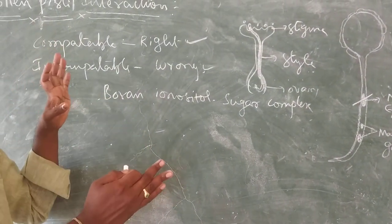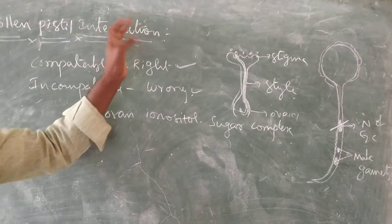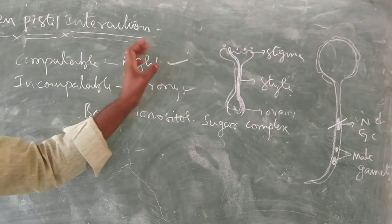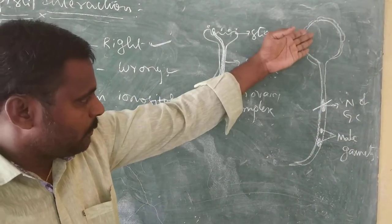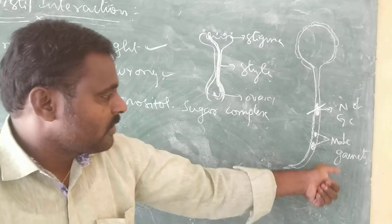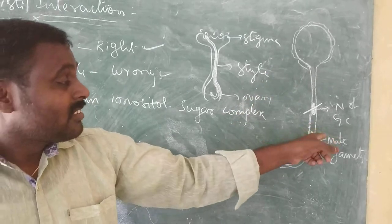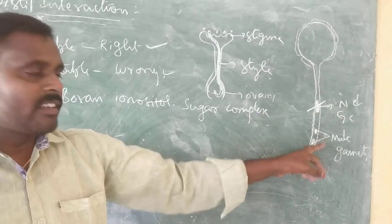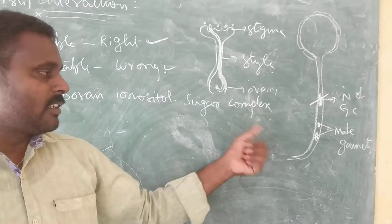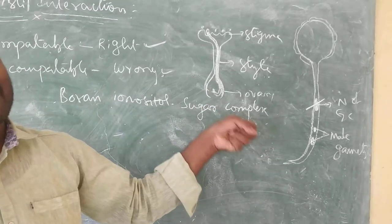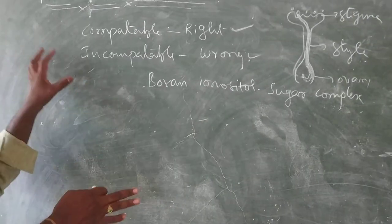Pollen-pistil interaction is now complete. After pollination, post-pollination events take place: the pollen grain germinates, produces a pollen tube, and the pollen tube carries two male gametes. These two male gametes are formed by mitotic division of the nucleus of the generative cell. These male gametes then travel to reach the embryo sac, which is present inside the ovule.